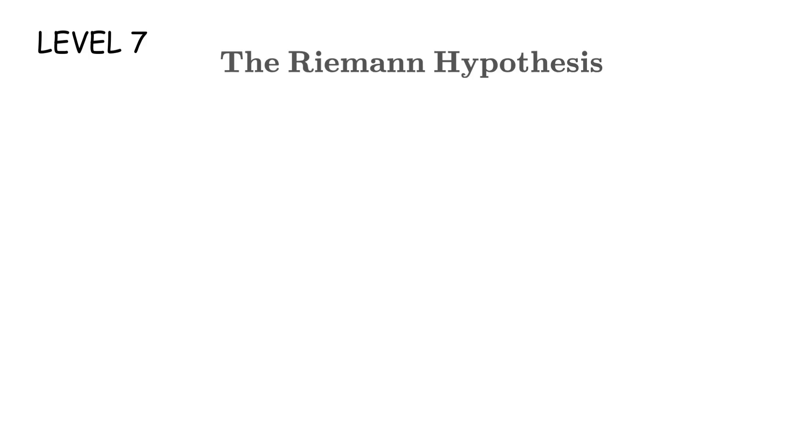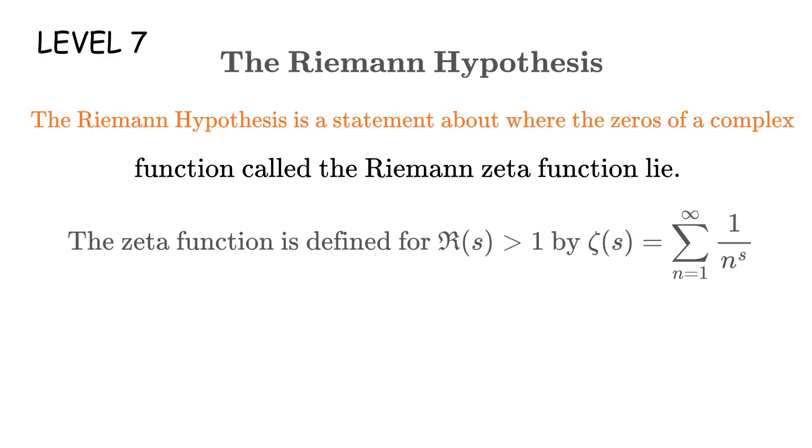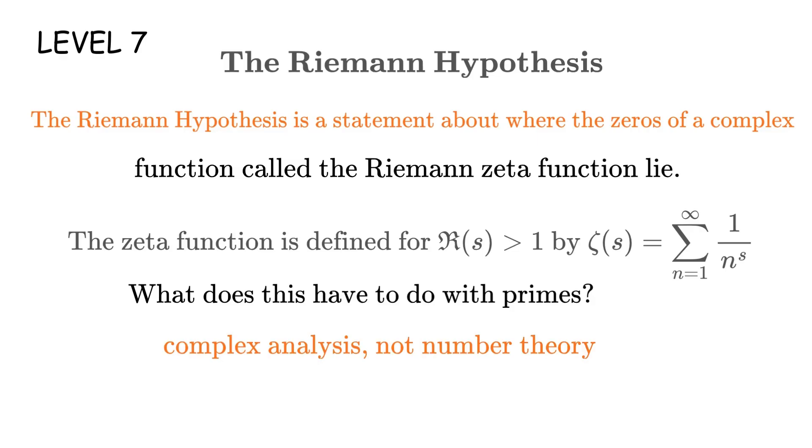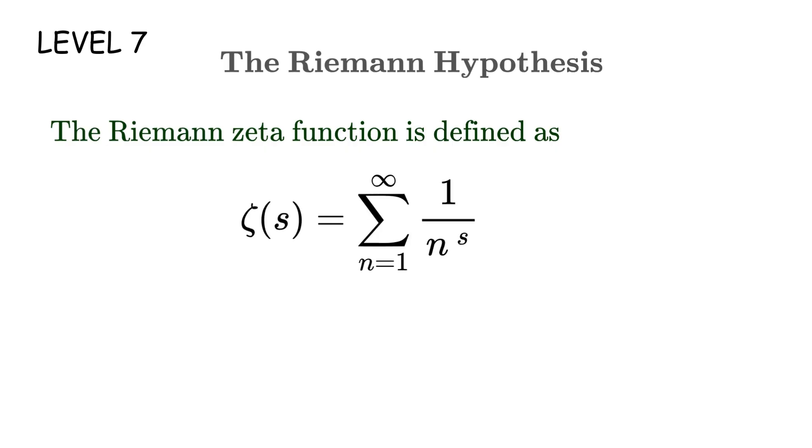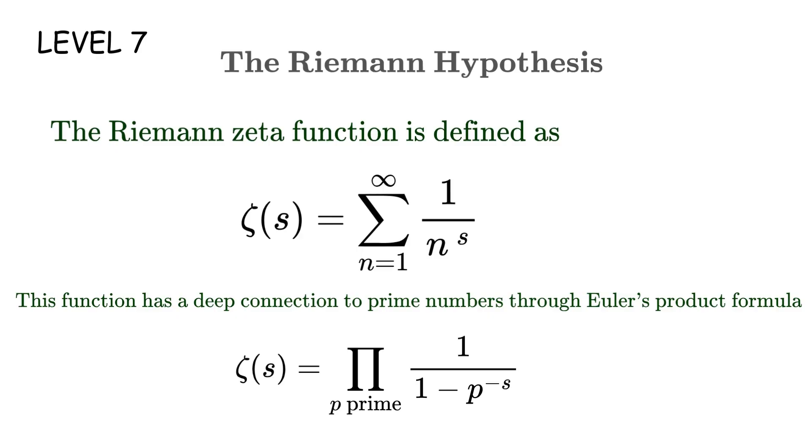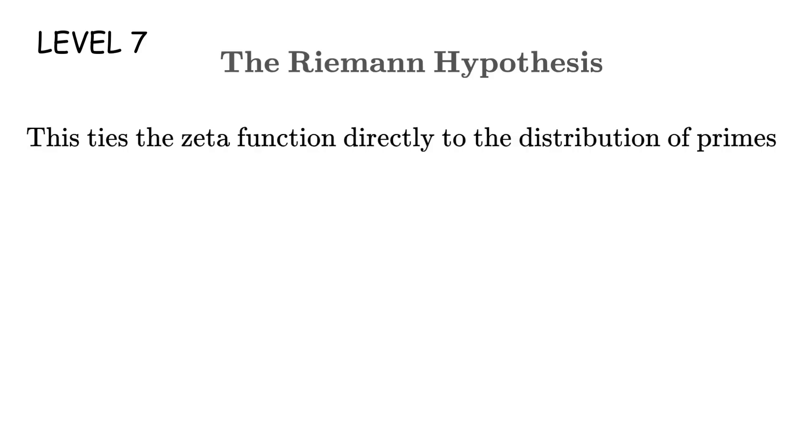Level 7. The Riemann hypothesis. The Riemann hypothesis is a statement about where the zeros of a complex function called the Riemann zeta function lie. Specifically, it says all non-trivial zeros have a real part equal to one half. Now I know what you're thinking. What does this have to do with primes? This sounds like complex analysis, not number theory. But it's actually the deepest mystery about primes. The Riemann zeta function is defined as ζ(s) equals the sum from n equals 1 to infinity of 1 over n raised to the power of s. Now this function has a deep connection to prime numbers through Euler's product formula. The zeta function equals the product over all primes p of 1 over 1 minus p raised to the power of negative s. This ties the zeta function directly to the distribution of primes.